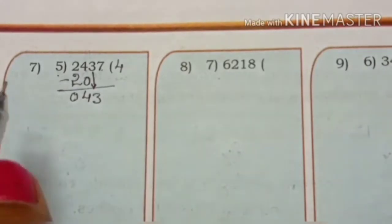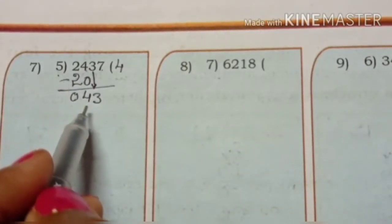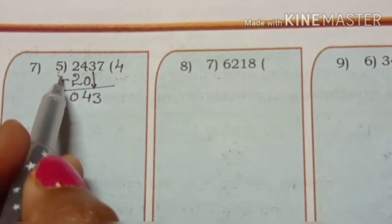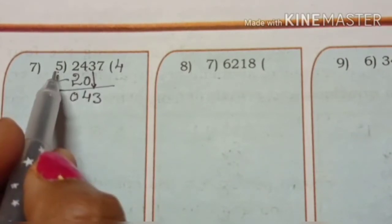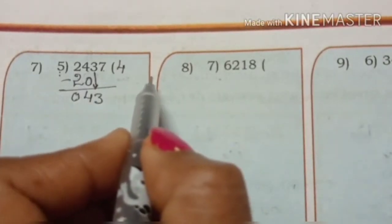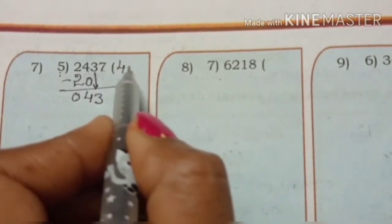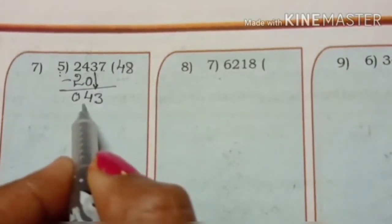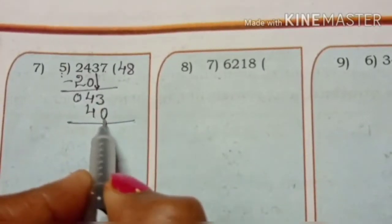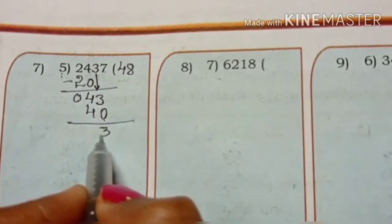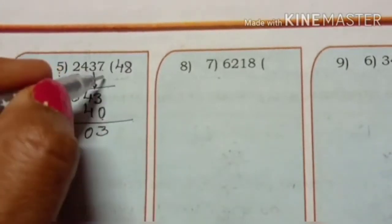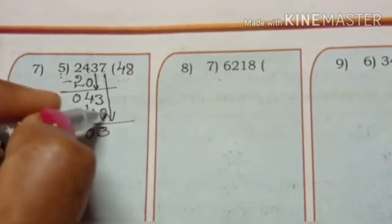Now we divide 40. 8 times 5 is 40. 3 minus 0 is 3, 4 minus 4 is 0. Now bring down 7.